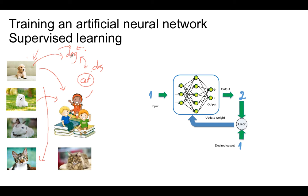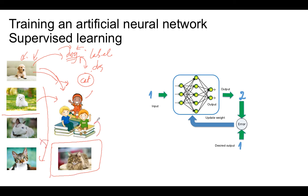We call this collection the dataset, and the label is the name we assign to each image. After going through once, we repeat again and again, correcting the child until they satisfy all images — that is when training finishes. After training, they can answer every image correctly. However, if we give a picture not in the dataset, whether they can answer correctly depends on how many pictures they learned from. As many as possible should be given to get correct answers.